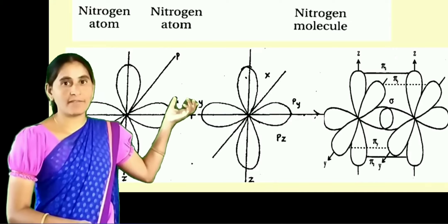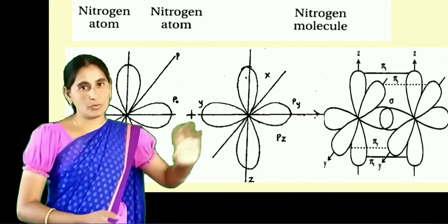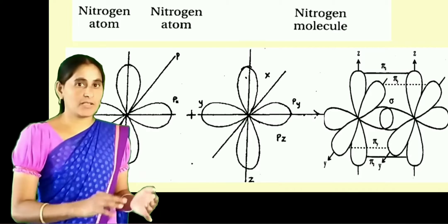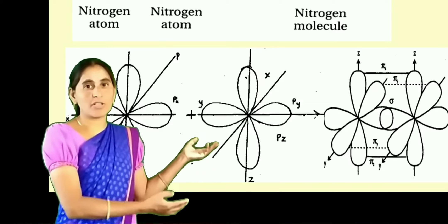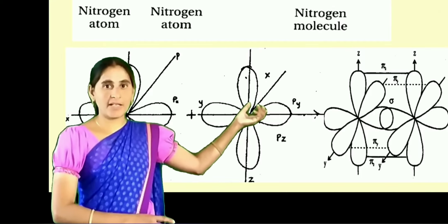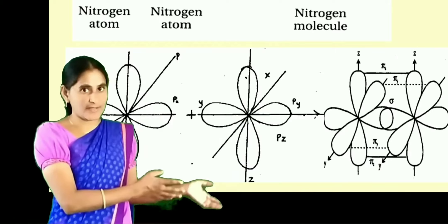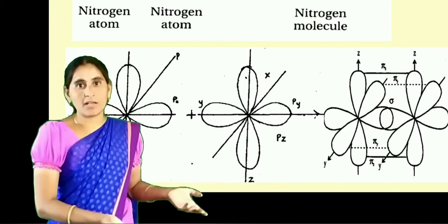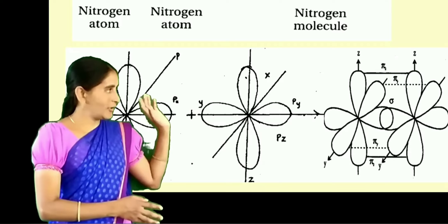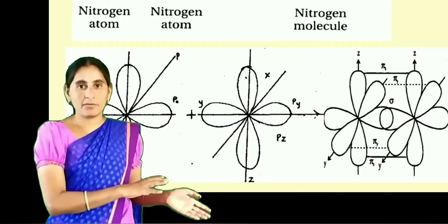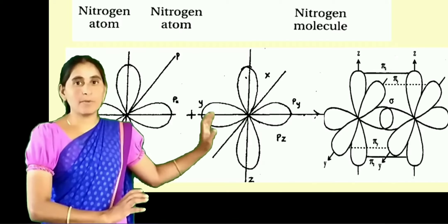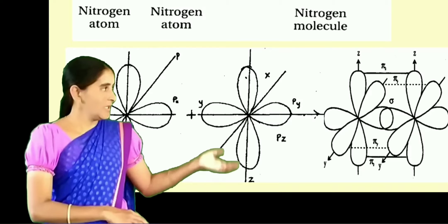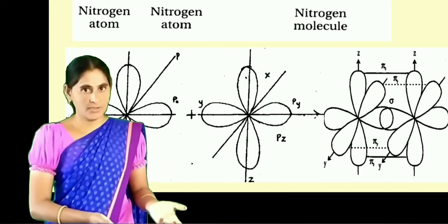One sigma and one pi bond will form — that's why we call this bond formation as a double bond. In nitrogen, its atomic number is 7 and its configuration is 1s2, 2s2, 2p3. Unlike oxygen, nitrogen has three unpaired electrons — one in 2px, one in 2py, and one in 2pz. The 2pz of one nitrogen and 2pz of another nitrogen will involve in side-on-side overlap forming one pi bond. The 2py of one nitrogen and 2py of another nitrogen also involve in side-on-side overlap forming another pi bond. The 2px and 2px of two nitrogens will involve in end-on overlap forming one sigma bond. So in nitrogen, one sigma bond and two pi bonds will form — that is the formation of triple bond.